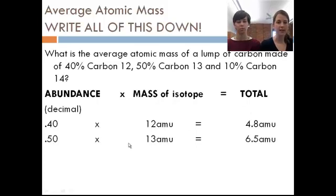So then I do the same thing for the next isotope. Convert my abundance to a decimal, which is 0.5. I multiply it times the mass of that isotope, and I get 6.5 amu. I do the same thing for the last isotope. I convert 10% into 0.1. I multiply it times 14 amu, and I get a total of 1.4 amu.